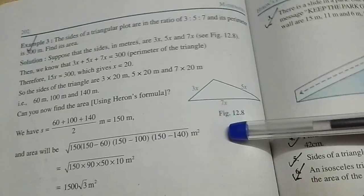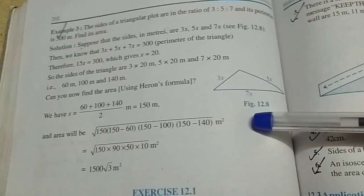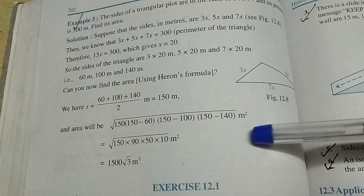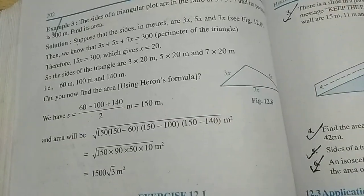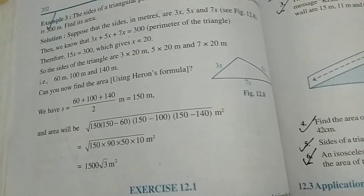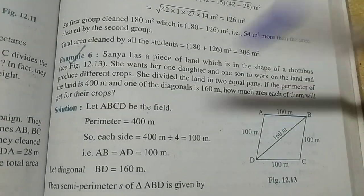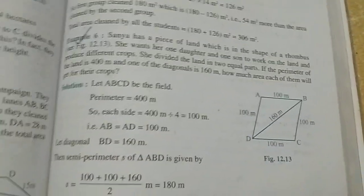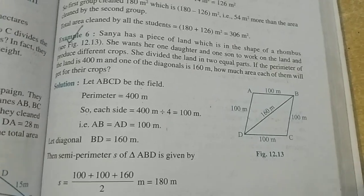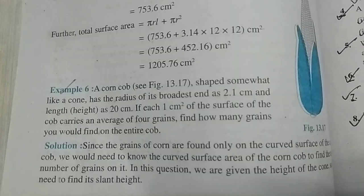This question, Example 6, the rhombus one, is very important. From Surface Area and Volume, you have this Example 6 which is important.